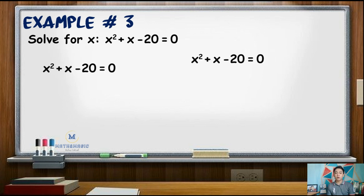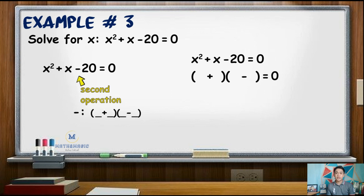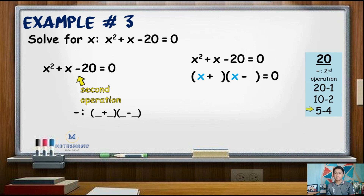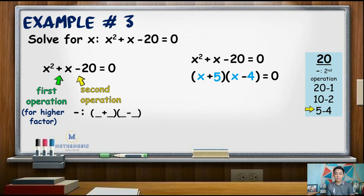Notice that the second operation is subtraction, so expect that the binomial factors are expressed as a sum and a difference. Next, factor the first term x squared — that is x times x. Then think of factors of 20 that when subtracted give a difference of 1. Those are 4 and 5. Take note that the higher factor will take the sign of the first operation, so in this case 5 should be positive. Our factors now are quantity x plus 5 and quantity x minus 4.